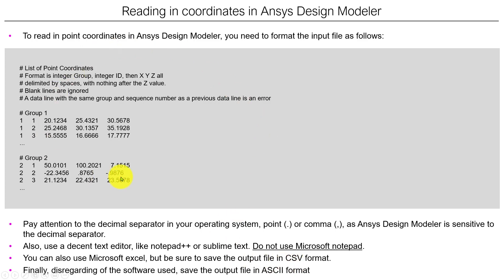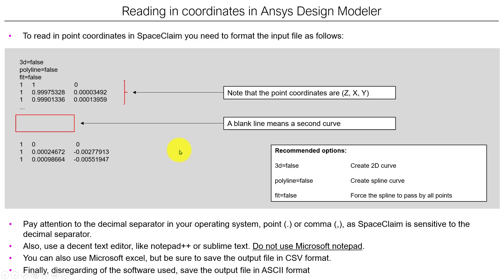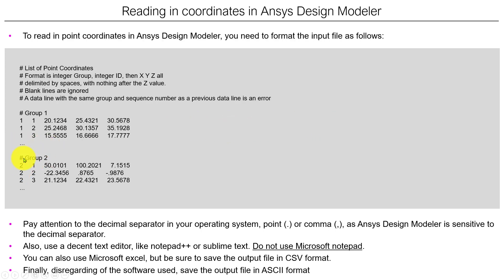Here is how you need to read the coordinates for ANSYS Design Modeler, and this is how you need to read the coordinates for SpaceClaim. In SpaceClaim it's a little bit different — there are no comments, all the lines are continuous, and there is no space between lines. If there is a blank line, it means that is a second group, equivalent to a group separator.